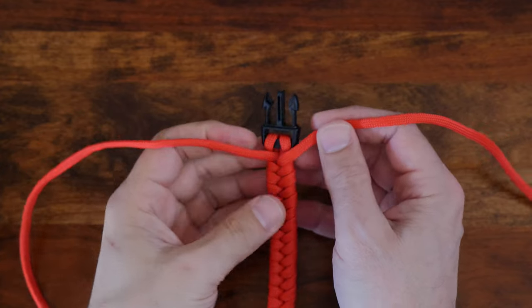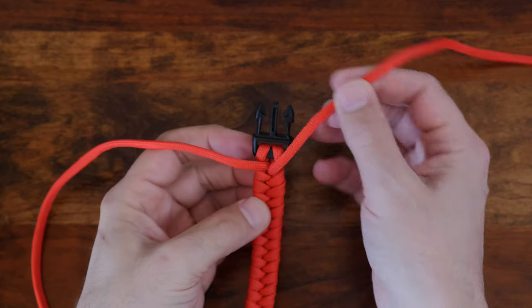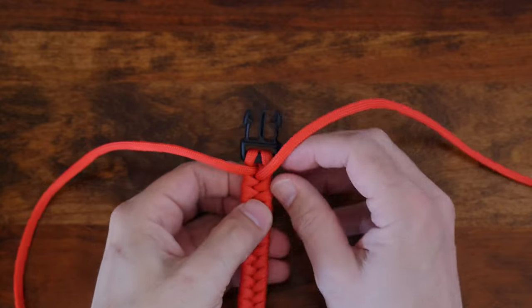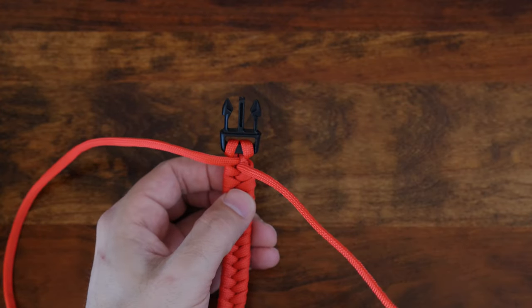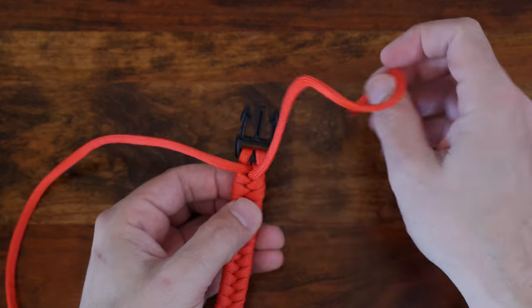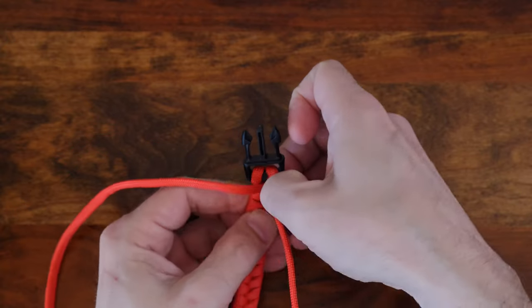With the bracelet off the jig, I'm going to loosen the last weave on each side so I can pass my ends through before tightening it back up. This is going to provide a bit more strength and security so your finished end won't come out.